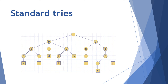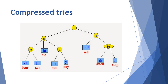On the right side, the words are sell, stop, and stock. Here S is a common letter, so it is placed as the main node. This is about standard tries. Next is compressed tries, where letters are compressed into a single node, so fewer nodes are required.